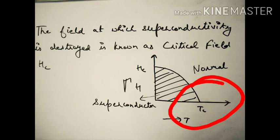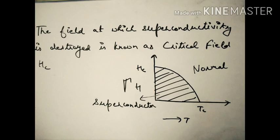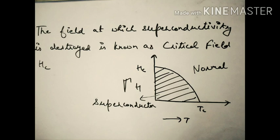Graphically, Tc indicates the critical temperature beyond which the superconductor returns to the normal state. If temperature is increased above Tc, it becomes a normal conductor. Similarly, if the applied magnetic field exceeds the critical field, resistance returns and the material turns into a normal conductor again. So the superconductor has limits: a temperature limit and a magnetic field limit.